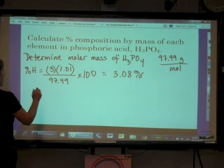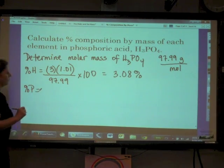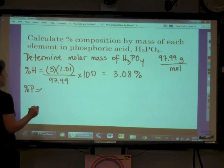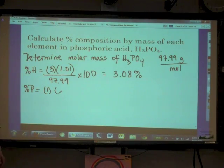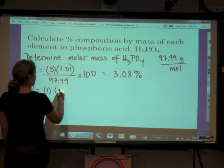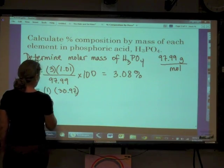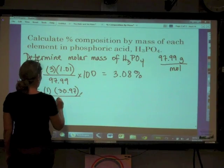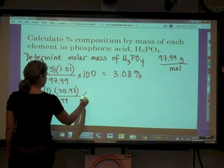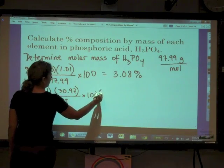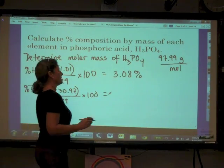Let's go to the next one. How much is phosphorus contributing? Well, phosphorus, I've got one of them. And the molar mass of phosphorus is 30.97. And then I'm going to divide it by the whole, which is 97.99, multiply it by 100. And I'm going to end up getting 31.61%.